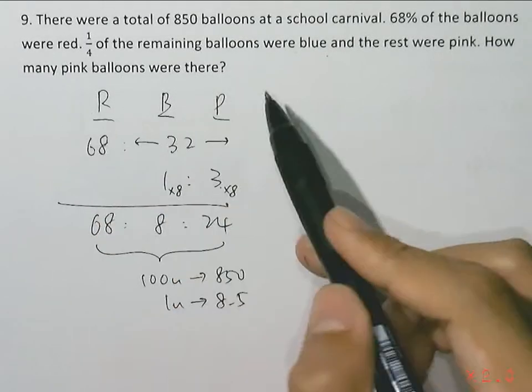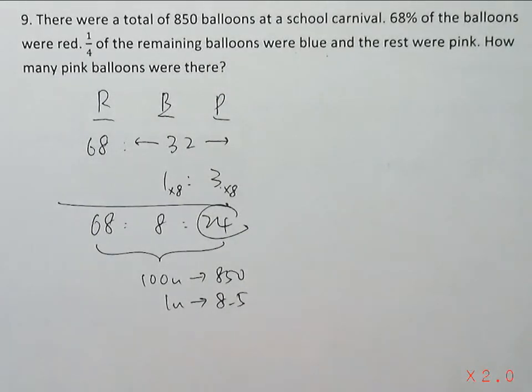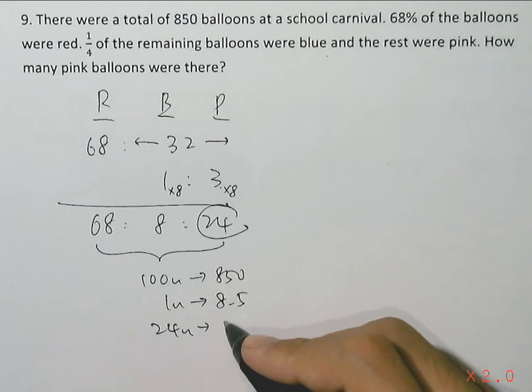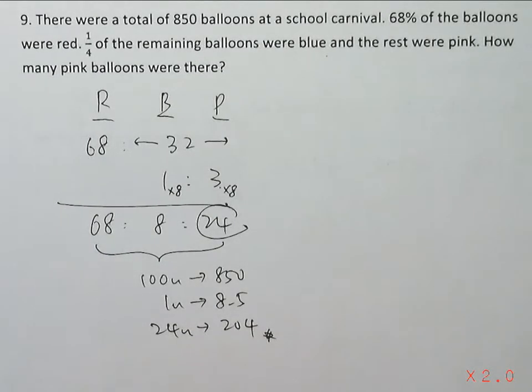How many pink balloons were there? We have 24 units over here. So that's 8.5 multiplying by 24, giving us 204 balloons for the pink ones.